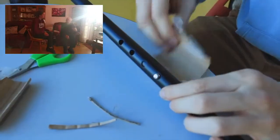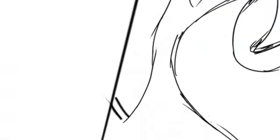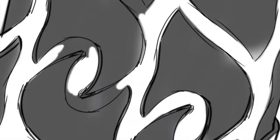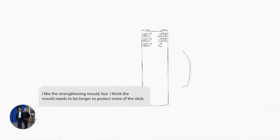After speaking with Ralph, it was clear that our initial handle concepts to improve stability were not feasible, so we designed a mold that would protect the vulnerable part of the walking stick.